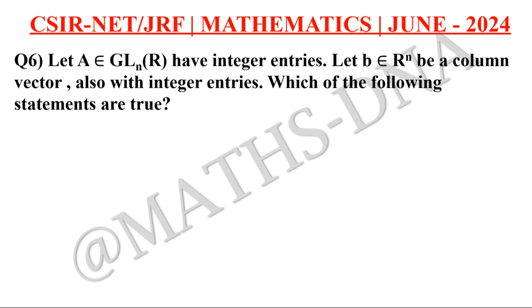Now, let B belongs to R^n, be a column vector, also with integer entries. Two things: the matrix has integer entries, and second, B, the column vector also has the integer entries. Then which of the following statements are true? The options are A, first one, if AX equals B, then the entries of X are also integer. We have to check whether this is a true statement or a false one.